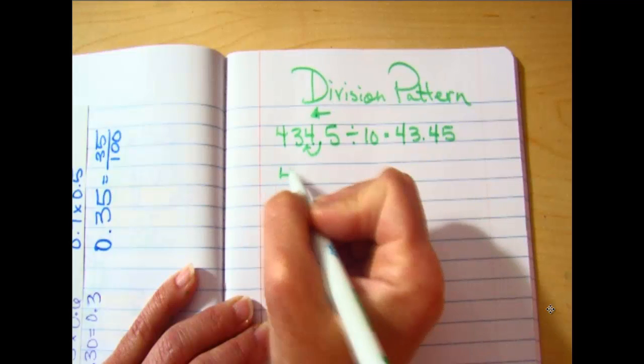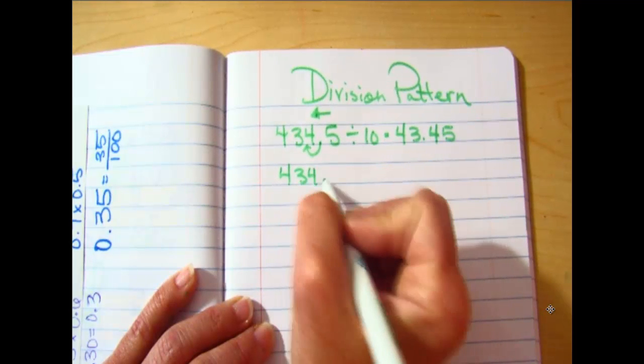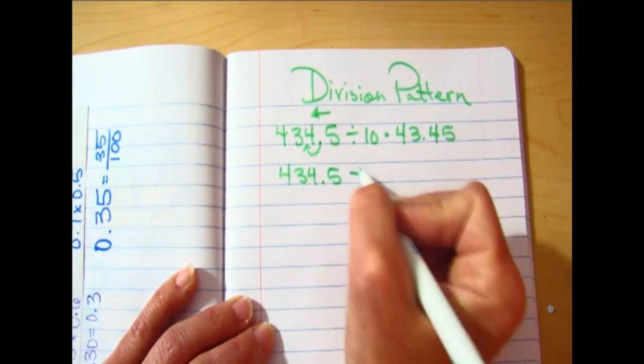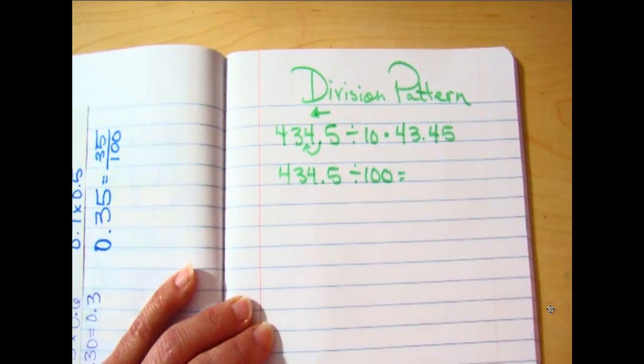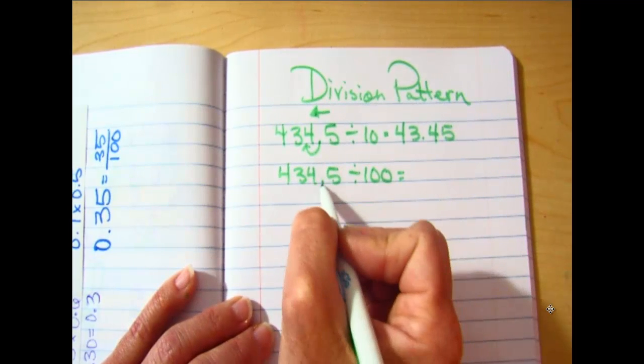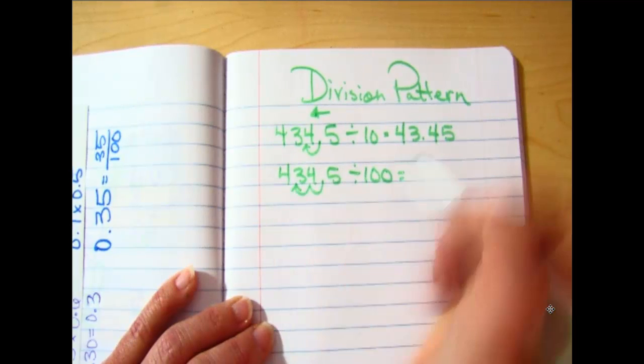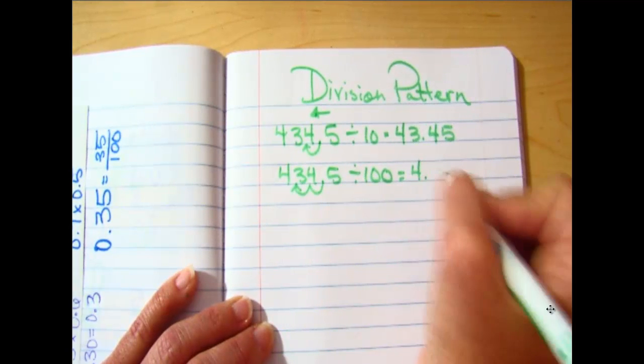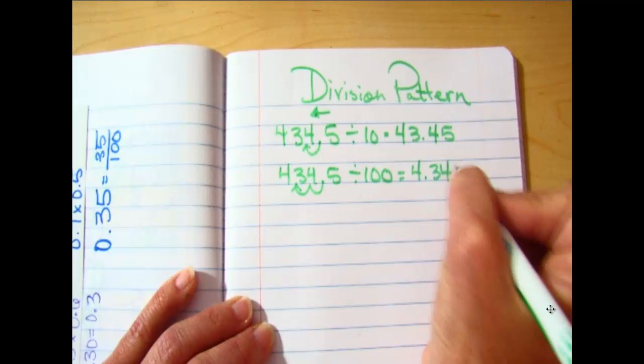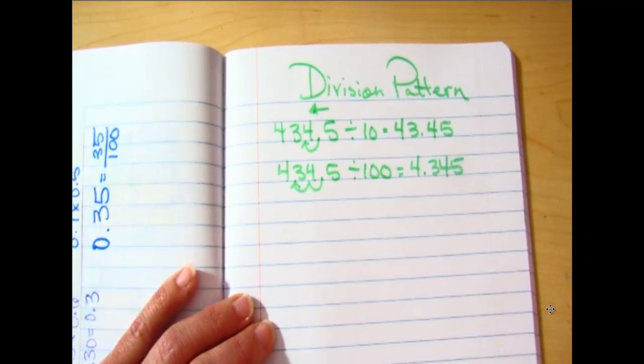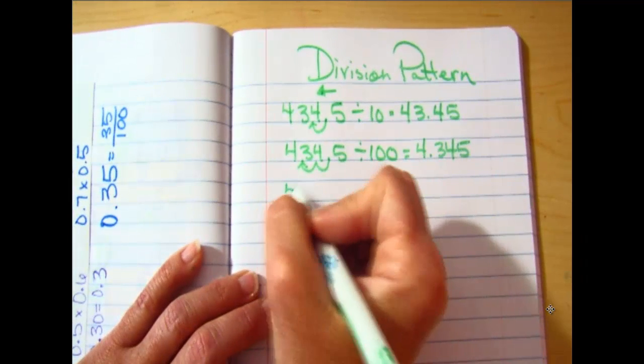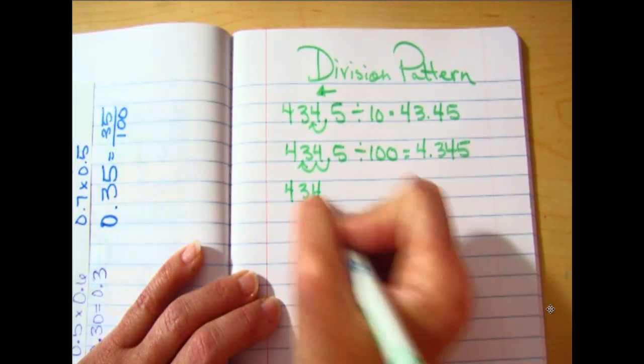If I do the same number divided by 100, how many times am I going to move? Twice. Hop, hop. And I have 4.345. And then if I took the same number and I divided it by a thousand, how many times am I going to move it now?